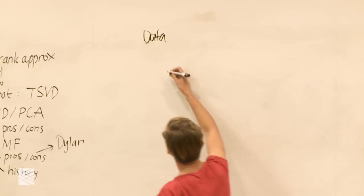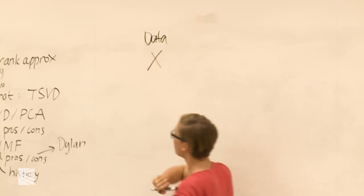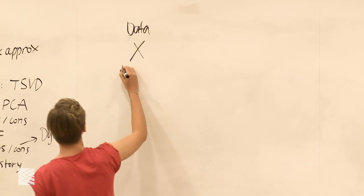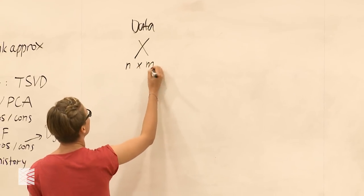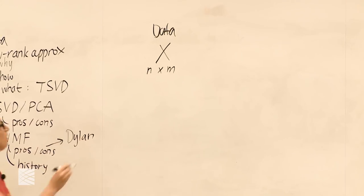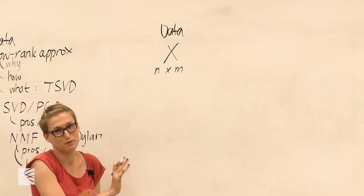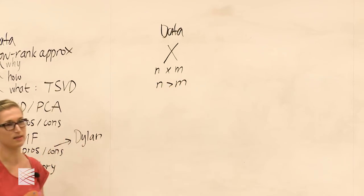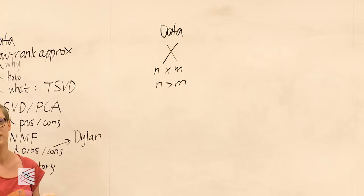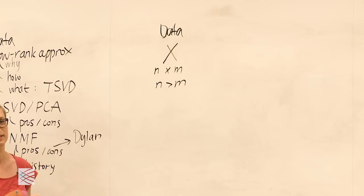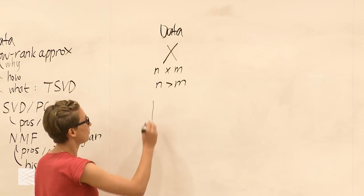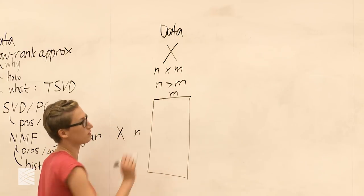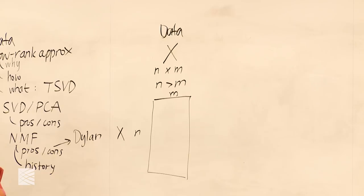What do we mean? Notationally, we mean some capital X, a matrix that has N rows — the samples — and M columns. Just for specificity, we're going to assume for most of this talk that N is greater than M. Everything I'm going to say works either way, but just to fix our eye on something. So X looks something like this: N samples, M columns.